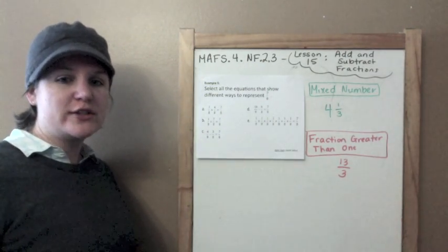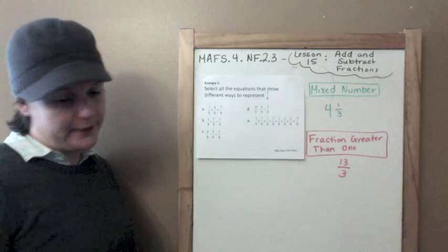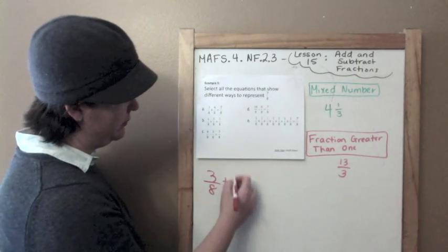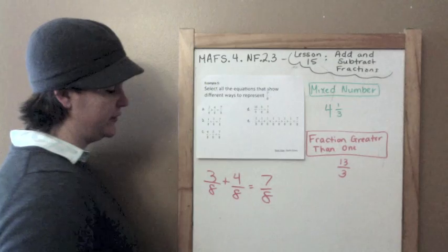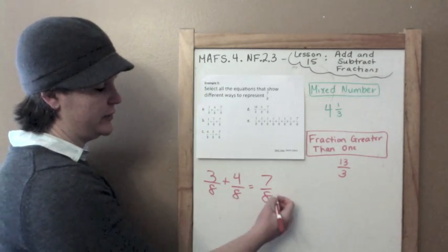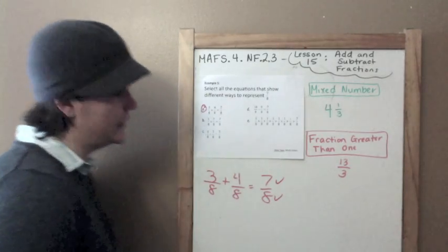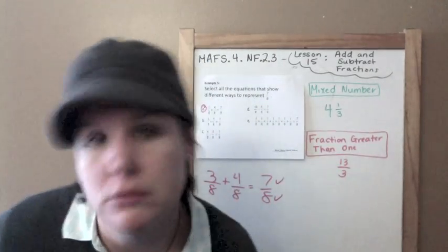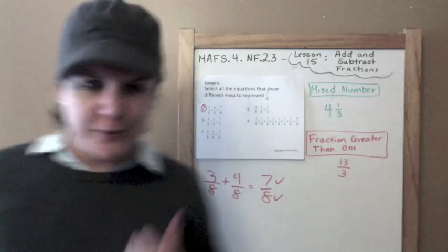Example five: select all the equations that show different ways to represent seven-eighths. The first one says three-eighths plus four-eighths equals seven-eighths. Denominators are the same, so that works. Three plus four equals seven — that works. That was easy. A is correct. But it's a multi-select — I need to select all possible answers, so I need to keep working it out. Don't just stop at A.